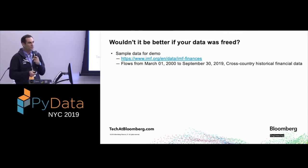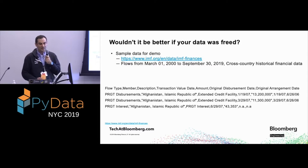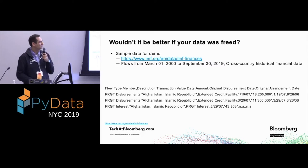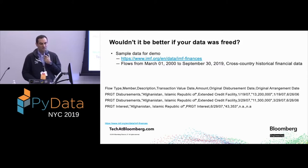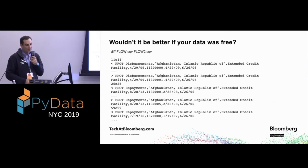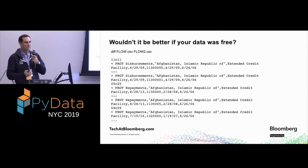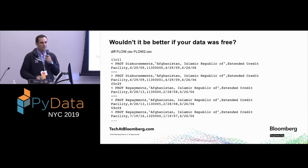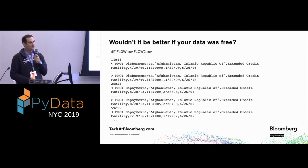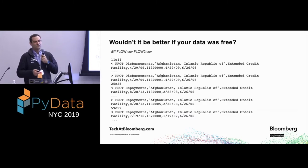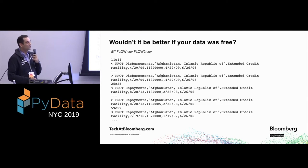I'm going to show some demos using data from the IMF website. One of the first things you'll have to do with this kind of data is diff against old data when you make a change. One way to do it, if it's in some ASCII format, is to just call the diff command, which gives you a quick diff of all rows that have a difference.